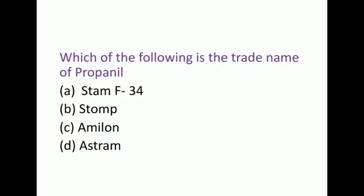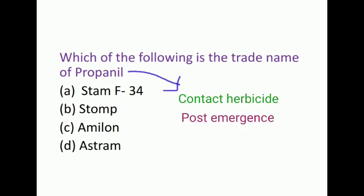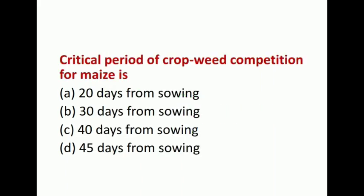Next question is: Which of the following is the trade name of propanil? The options are Stam F-34, Stomp, Ametryne, and Astralon. The answer is Stam F-34. Propanil belongs to amide groups. It is a contact herbicide recommended for post-emergence weed. The next question is: Critical period of crop-weed competition for maize is 20 days after sowing, 30 days, 40 days, and 45 days. The right answer is 30 days from date of sowing.